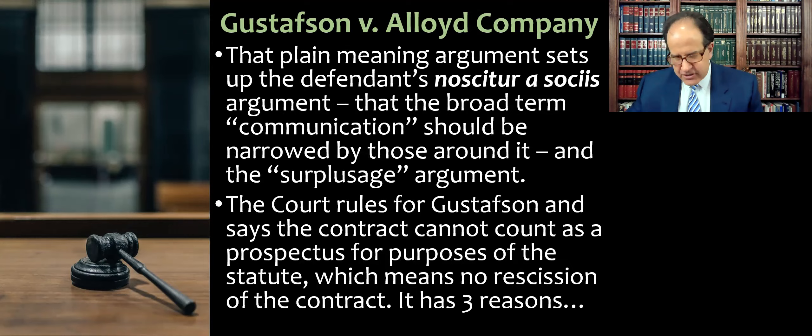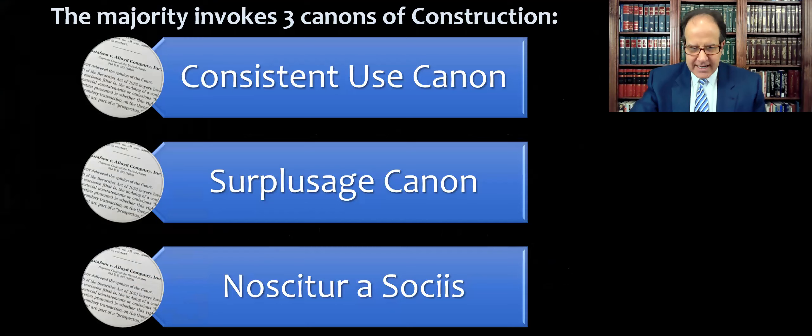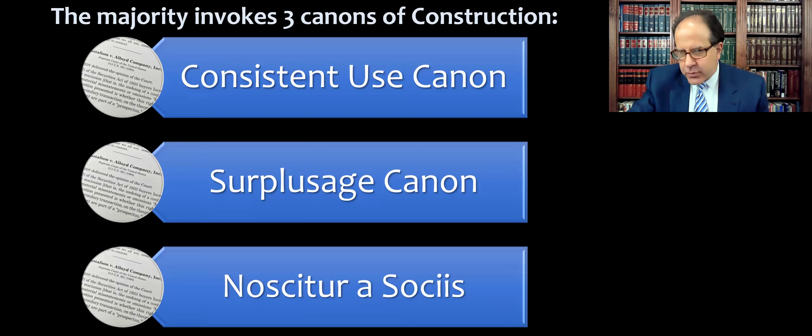The court has three reasons for this ruling, which takes us to our three canons: the consistent use canon, the surplusage canon, and the noscitur a sociis canon.